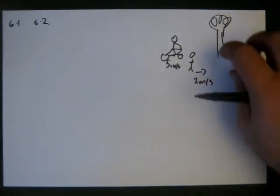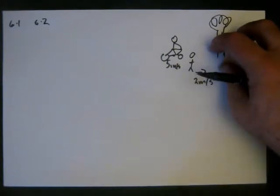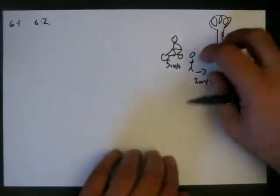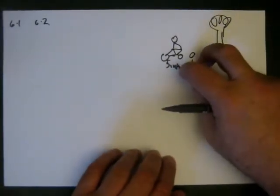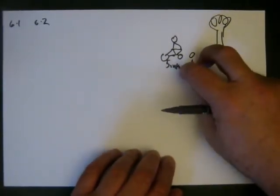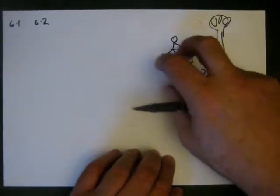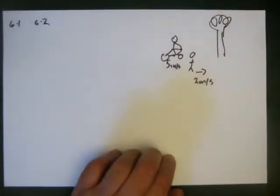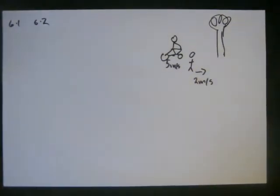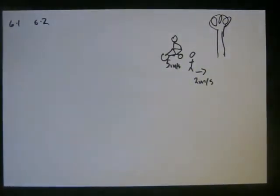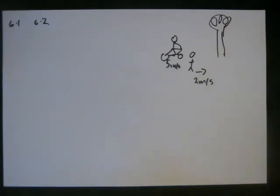So we've got three frames of reference here. We can look at the frame of reference of the tree, the frame of reference of me walking, or the frame of reference of the cyclist. A frame of reference is basically what an observer actually sees.